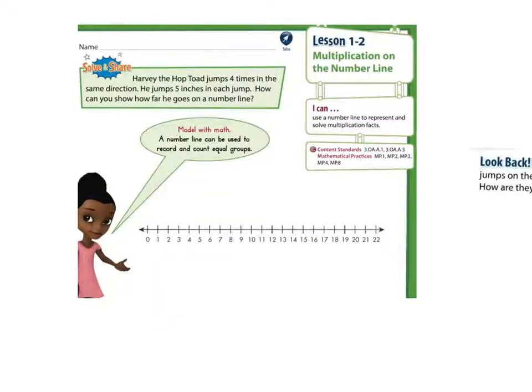Harvey the Hop Toad jumps four times in the same direction. He jumps five inches in each jump. How can you show how far he goes on a number line?